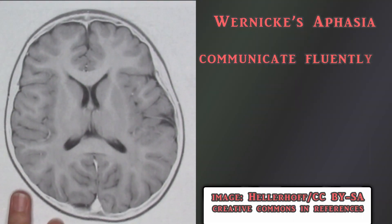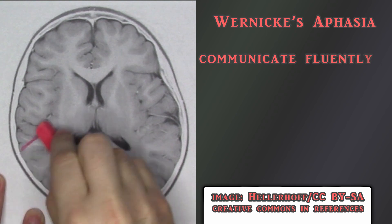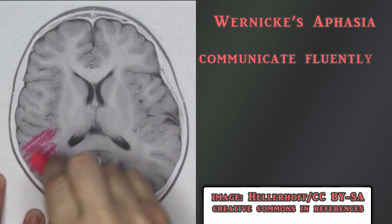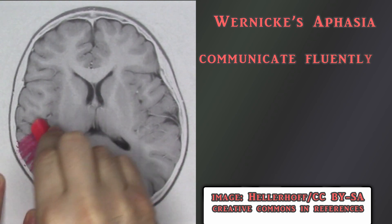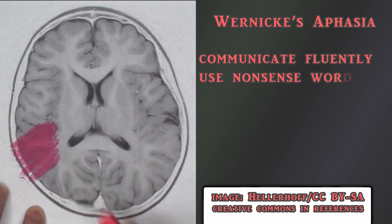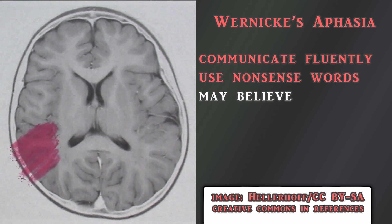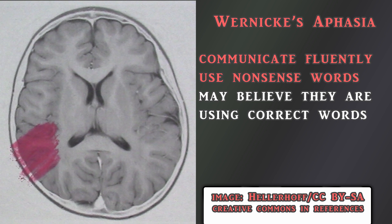Less severe than global aphasia is a type called Wernicke's aphasia. These people can speak fluently and can use full sentences. However, the sentences usually contain extra nonsense words, and listeners have trouble decoding what they are trying to say. To the person with fluent aphasia, however, they feel as if they are communicating effectively, and they may be unaware of the errors in their speech.